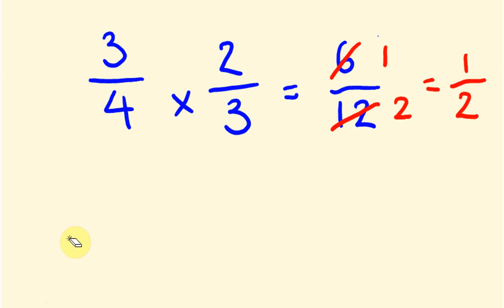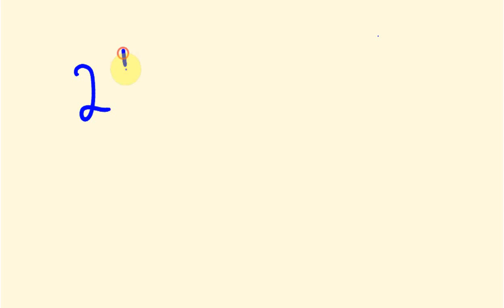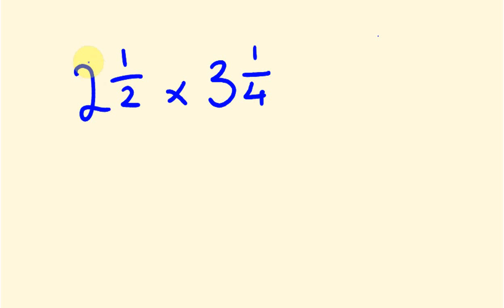Now I'm going to put up some harder examples involving mixed numbers. Mixed numbers are numbers that look like this — say two and a half times three and one quarter. To multiply these is a bit more difficult, but not much. It just requires one extra step. We have to change our mixed number — which has a whole number and a part number — into an improper fraction, where the top number is bigger than the bottom number.